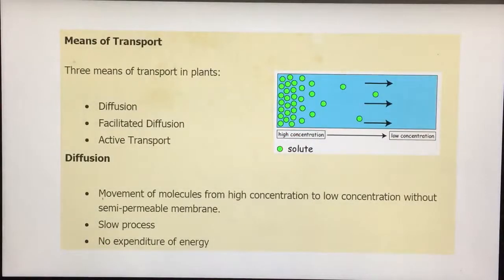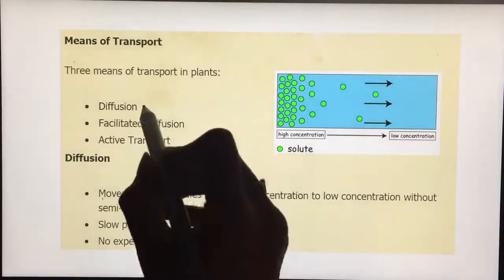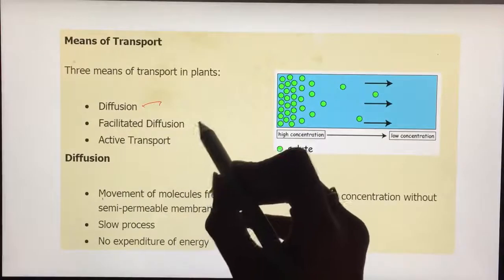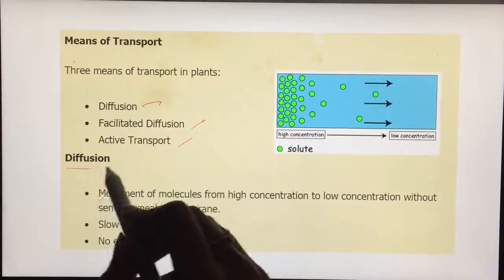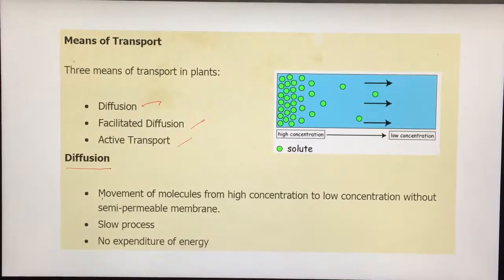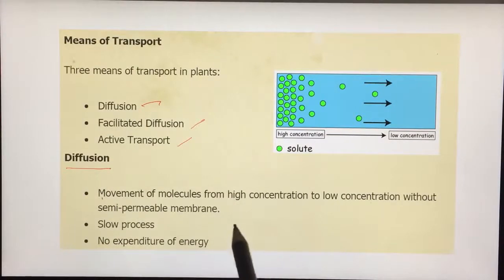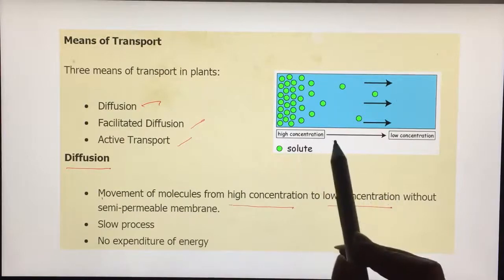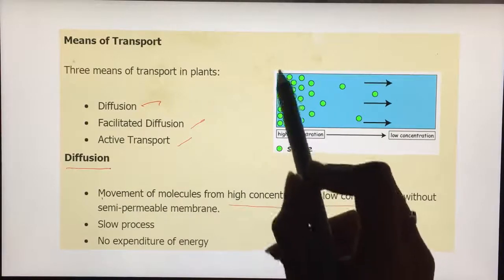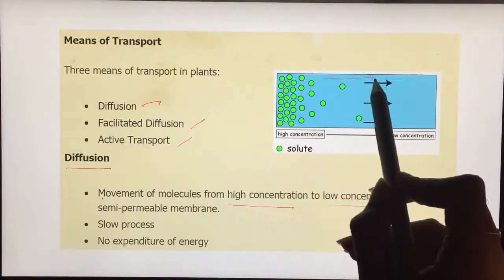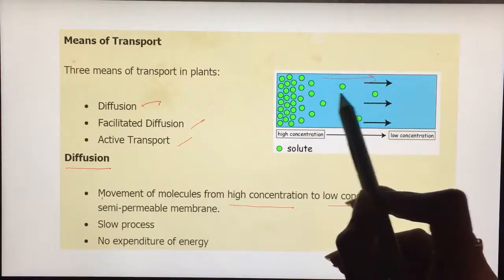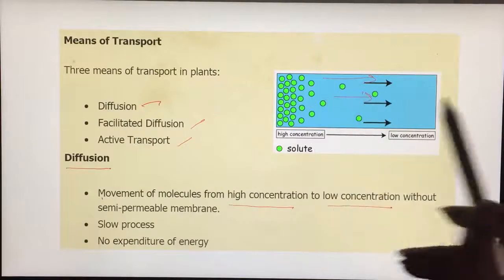There are basically three types of transport that will come into scene in plants. One is diffusion, the other one is facilitated diffusion, and the last one is active transport. Diffusion is a very common term which you would have heard. Everybody knows the definition - that is a movement of particles from high concentration to low concentration. Let's take a look upon this picture. Here the molecules are present in higher concentration and they just go without any energy requirement to the region of their lower concentration.